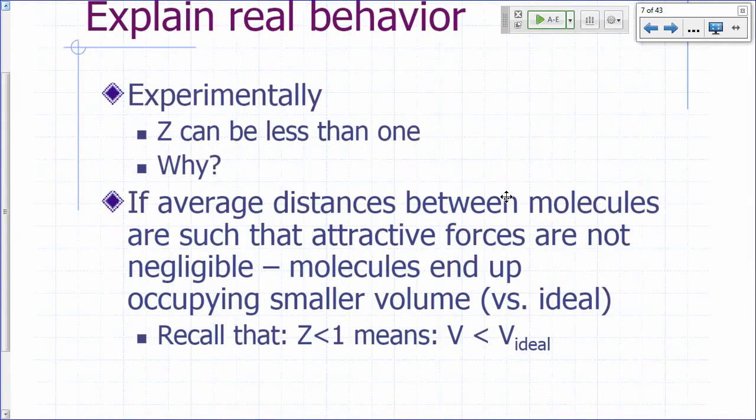Experimentally, Z can be less than one. Why? Well, when the average distance between molecules are such that the attractive forces are no longer negligible. So, if that person is close enough so you can now see how gorgeous that person is, then you start occupying a smaller volume. When the pressure is high enough so that the average distance between the molecules is such that attractive forces start to become important.